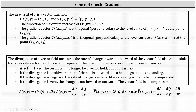The divergence of a vector field measures the rate of change inward or outward of the vector field, also called sink. For a velocity vector field, this would represent the rate of flow inward or outward from a given point. Looking at the formulas below, we find the divergence of a vector field and the result is a scalar field or function. This means at a given point we can determine a numerical value representing the rate of change inward or outward. If the divergence is positive, the rate of change is outward; if negative, the rate of change is inward. So we find the divergence of a vector field and the result is a scalar field.